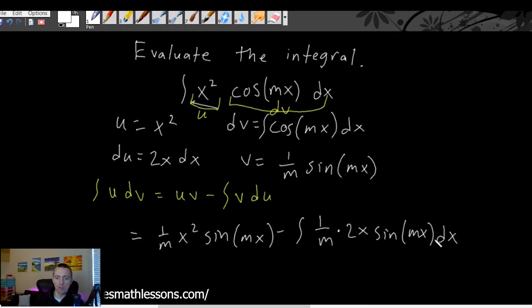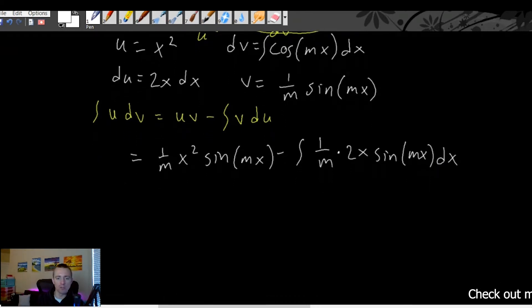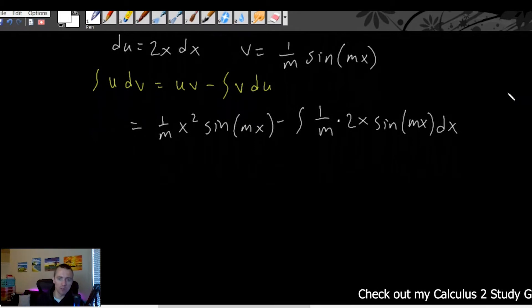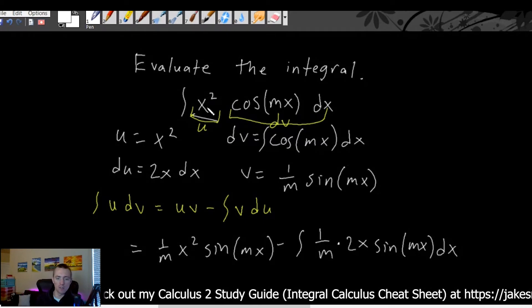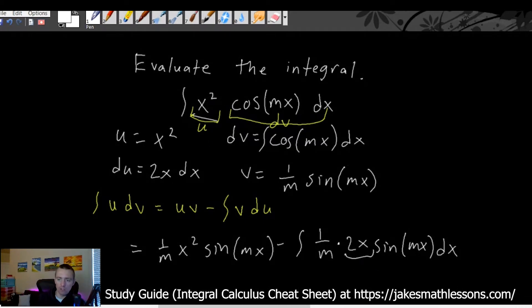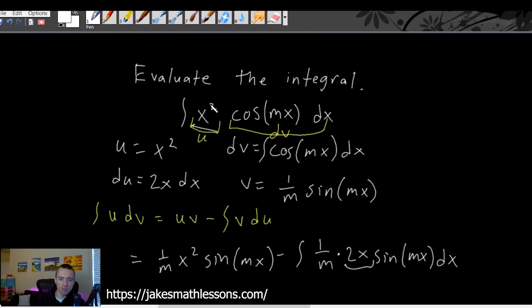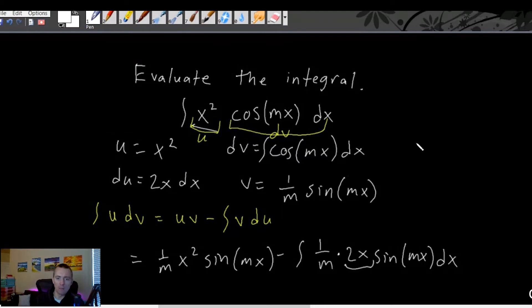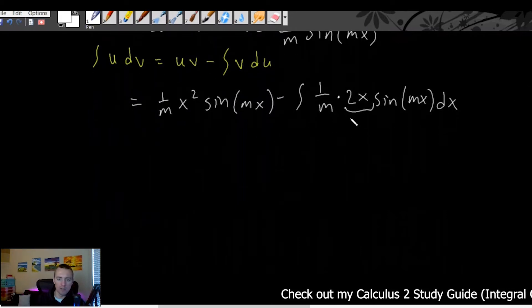We still have an integral with x times sine of mx that's not super easy to deal with. This goes back to what I was touching on — having to use integration by parts twice in one problem. It's not uncommon when you have a power function times a trig function. Taking the derivative of the 2x term gives just a constant, so each iteration the power keeps going down. Whether you had x squared or x to the 100th power, you could keep applying integration by parts, taking the derivative of the power term each time.